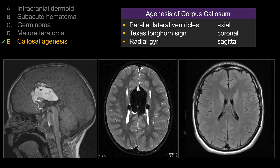On the sagittal view, you have this radial appearance of the gyri due to absence of the corpus callosum, as well as absence of the cingulate gyrus.